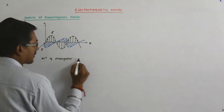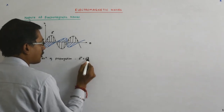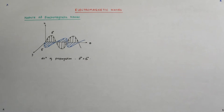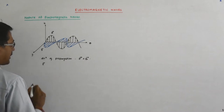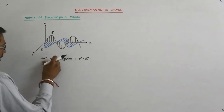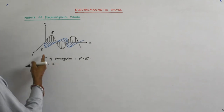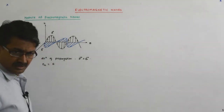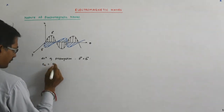The wave travels in the direction of E cross B. We had also said that the vector E — now that I know it is a vector, this is how it is represented — E is directed along either the positive or the negative direction of the x-axis.